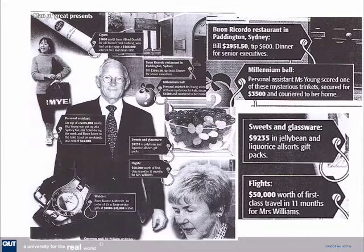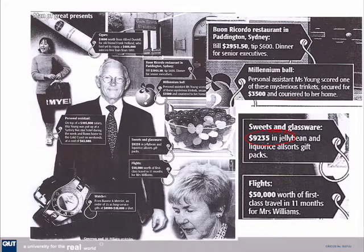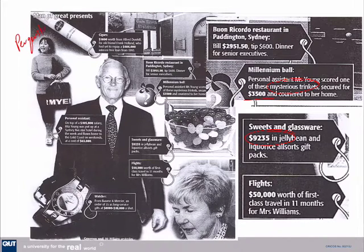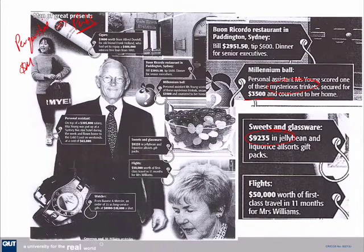We can clearly see where the interests don't align. There's a classic piece from a newspaper about Ray Williams from HIH and how he would spend some of the company's money — for instance, $10,000 on jelly beans, or a mysterious trinket worth $3,500. So there was this misspending of money. These kinds of misspends are called perquisites — you might have heard of the term 'perks' — and they're one kind of agency costs. But there are other kinds of agency costs worth actually billions, not just millions.